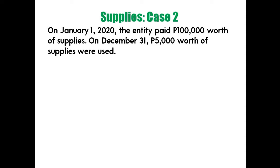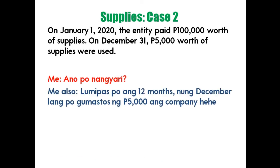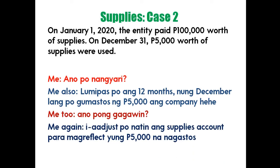Case 2 problem: On January 1, 2020, the entity paid 100,000 worth of supplies. On December 31, 5,000 worth of supplies were used — not remaining, but used. This is the difference from Case 1. Here, only 5,000 was consumed throughout the year. The adjusting entry is: Debit Supplies Expense 5,000; Credit Supplies 5,000.